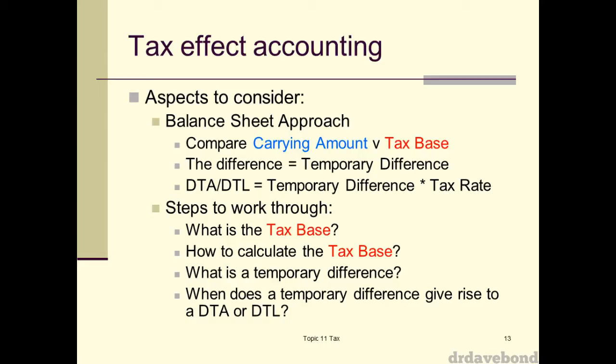We're going to go through an example of all of this. The tax rate will be given, so that's straightforward. The trickier parts are: for each asset and liability, working out what the tax base is; and figuring out whether it's going to be a DTA or DTL. The carrying amounts you already know from accounting. So the key questions are: what is the tax base, how do you calculate it, what's the temporary difference, and does it give rise to a DTA or DTL?